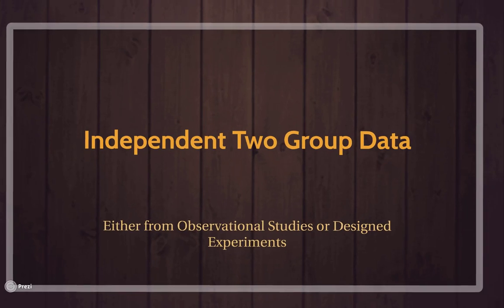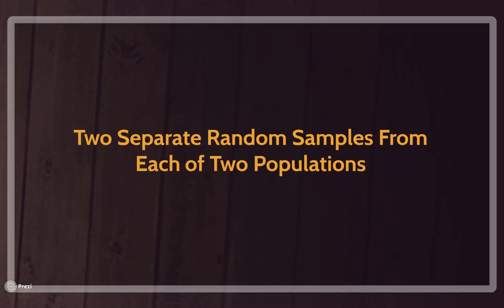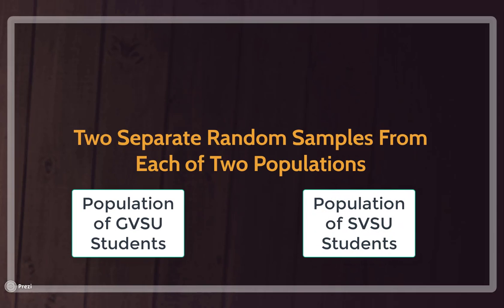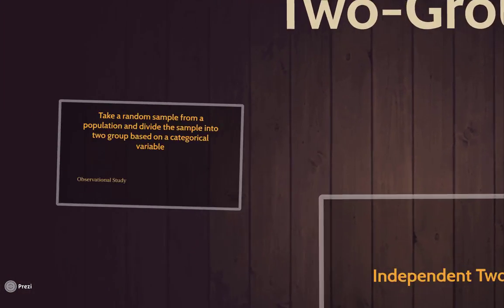There are a variety of ways to collect independent two-group data. One way is to take two separate random samples from two separate populations. For example, I could be interested in the time to run a mile and compare average times. I could use the population of GVSU students, take a random sample from that group, and then compare it to the population of Saginaw Valley students where I took a random sample from that group. It's independent because I wouldn't expect the time to run a mile for GVSU students to affect students at Saginaw Valley.